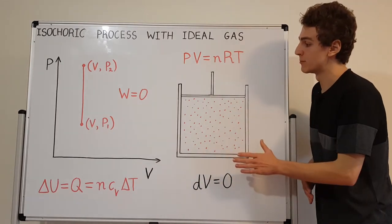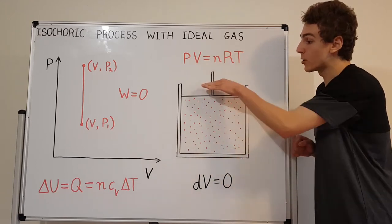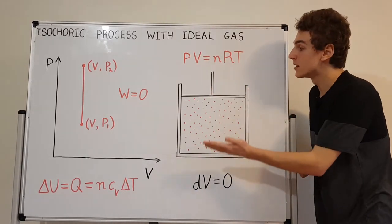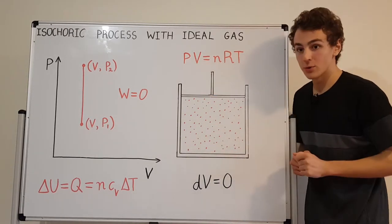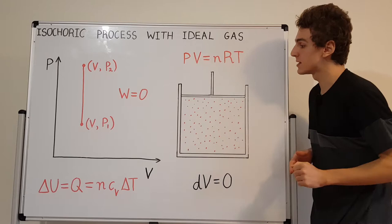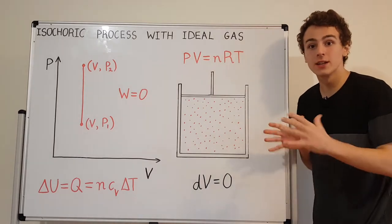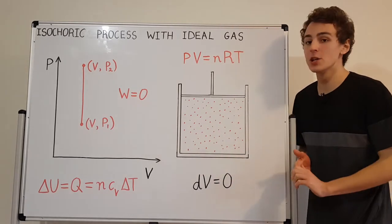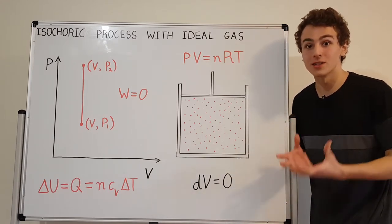So if we take an example system, such as an ideal gas contained within an enclosed container with a piston up here — normally this piston would be free to compress the gas, or the gas would be free to move the piston upwards and expand. But in an isochoric process, what we do is we fix the piston in place with some kind of pin or lock mechanism. If we keep that piston in place, the volume stays constant — it's a completely rigid container, and this volume is not going to change. So that is the most important condition for an isochoric process: the change in volume is zero, or in other words, it's a constant volume process.